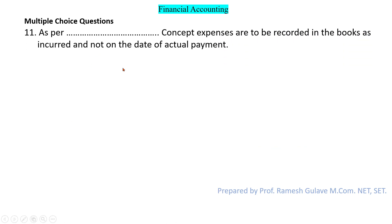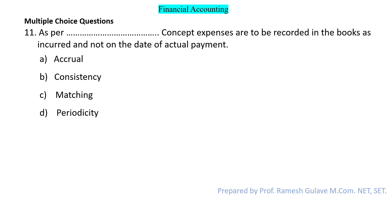The next question says: as per dash concept, expenses are to be recorded in the books as incurred and not on the date of actual payment. This is the accrual concept. As per the accrual concept, we record expenses when actually incurred, not on the date of actual payment. This is why we do accounting for outstanding expenses — for example, if salary was paid for 10 months, we record 2 months as outstanding. So option A is the right answer.